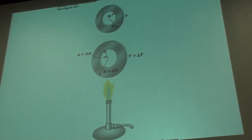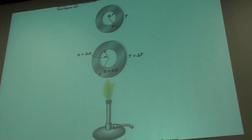Here we have a washer and we heat it up, and you notice the hole gets bigger. The hole doesn't get smaller. Some people think the metal would expand into the hole and make it smaller, but the metal expands by just the same amount on the outside of the hole as it would have expanded. So that takes the hole along for the ride — the hole gets bigger at the same rate as if there were actually metal of that same type inside the hole.